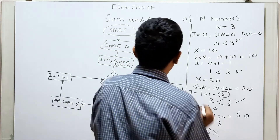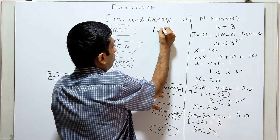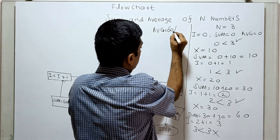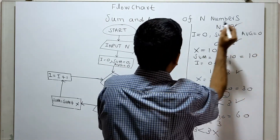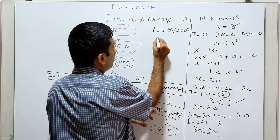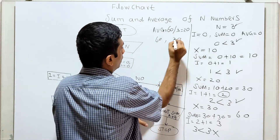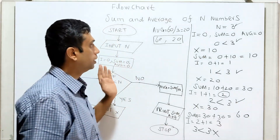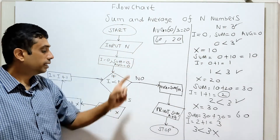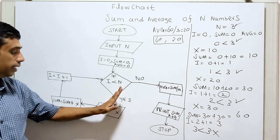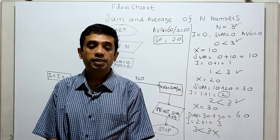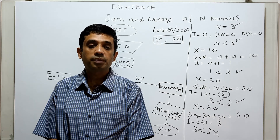Average equal to sum 60 divided by n, and n equal to 3, so average equal to 20. Print sum and average: sum is 60, average is 20. In this way the flowchart works perfectly to calculate the sum and average of given n numbers. That's it — thanks for watching this video, please subscribe to my channel, share, comment, and press the bell button. Thank you.